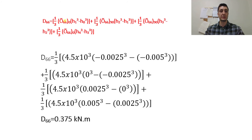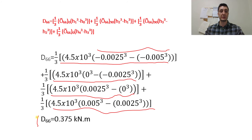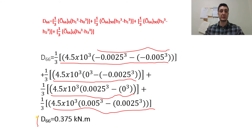For D-6-6 we use Q-bar 6-6, with the same thickness difference each time. Contributions come from the first, second, third, and fourth layers, and the D-6-6 value is shown here.